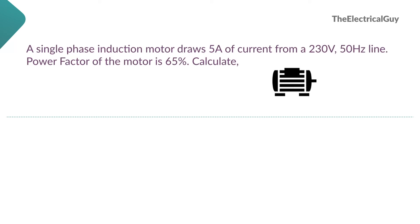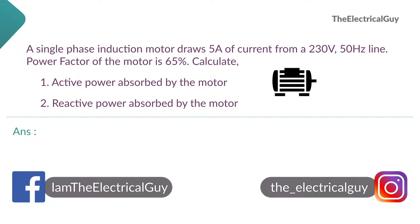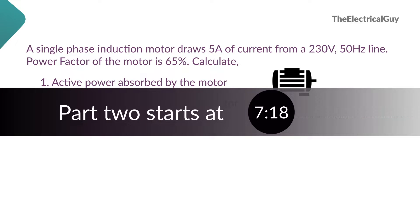Let's look at the problem. A single-phase induction motor draws 5 amperes of current from a 230-volt, 50-Hz line. The power factor of the motor is 65%. Calculate: number one, active power absorbed by the motor, and number two, reactive power absorbed by the motor. In the second part of the example, we will add a capacitor across the motor and see what changes it brings.